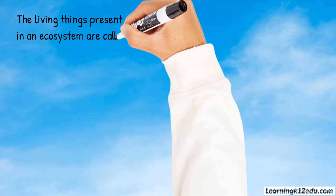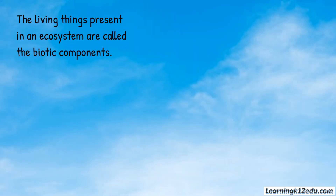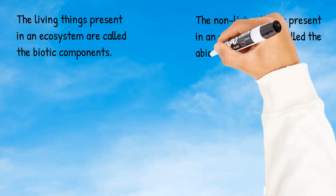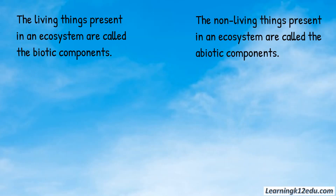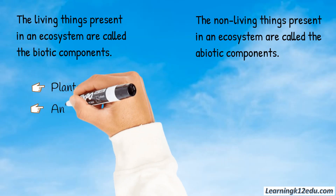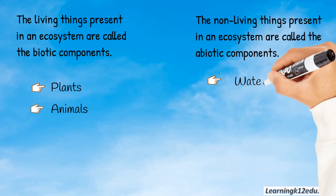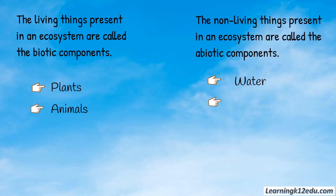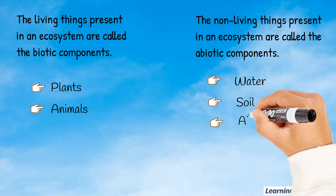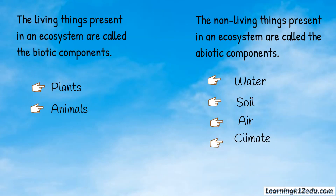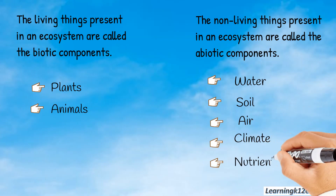The living things present in an ecosystem are called the biotic components. The non-living things present in an ecosystem are called the abiotic components. Biotic components include plants and animals. Abiotic components include water, soil, air, climate, and nutrients.